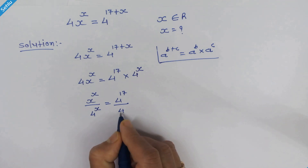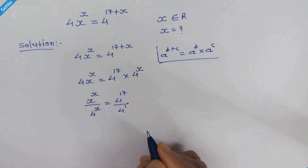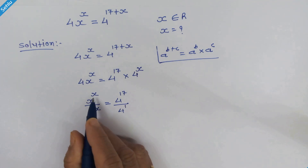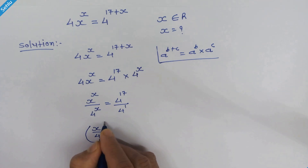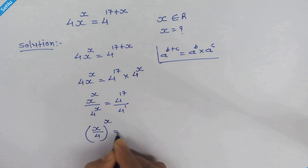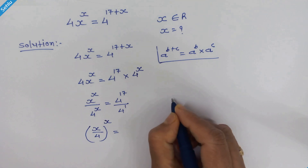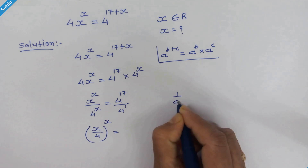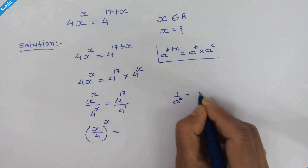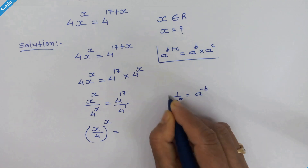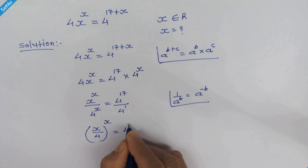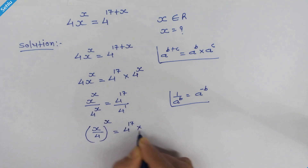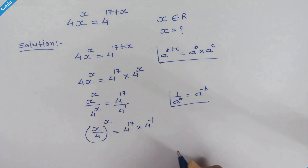Now this 4 has 1 as an exponent, and here we have the same exponent, so we can write it as x upon 4 whole raised to x. And if we have 1 upon a raised to b, then it will be a raised to minus b. So we can write it as 4 raised to 17 times 4 raised to minus 1.